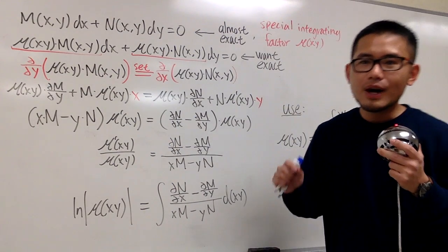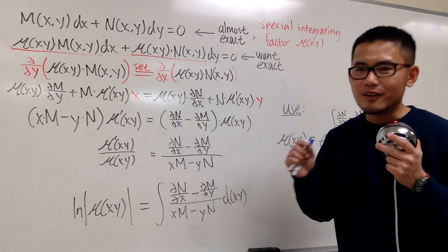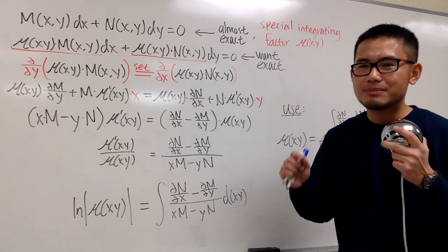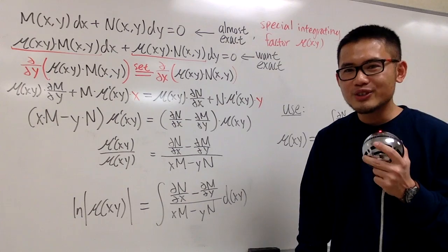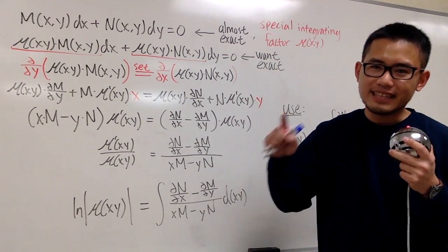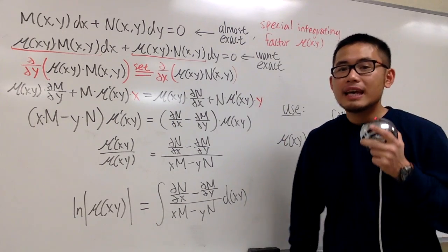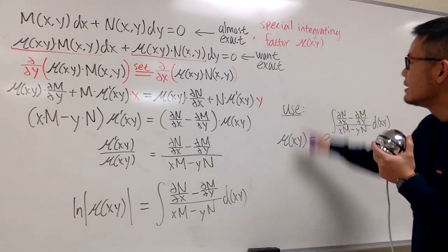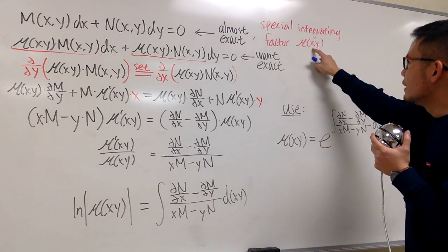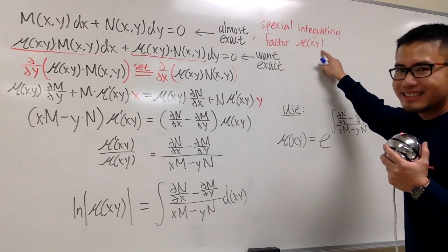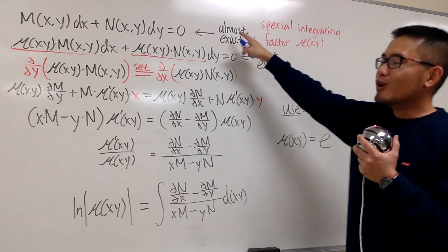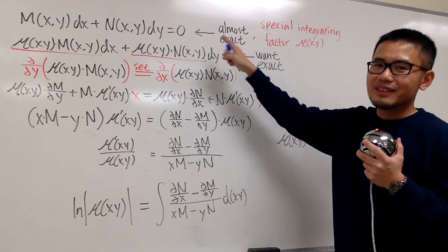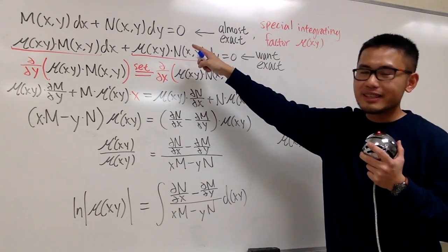In this video, I'll show you how to find a formula for the special integrating factor as a function of x times y. We'll write that as mu of x times y, and we'll do this for an almost exact differential equation.